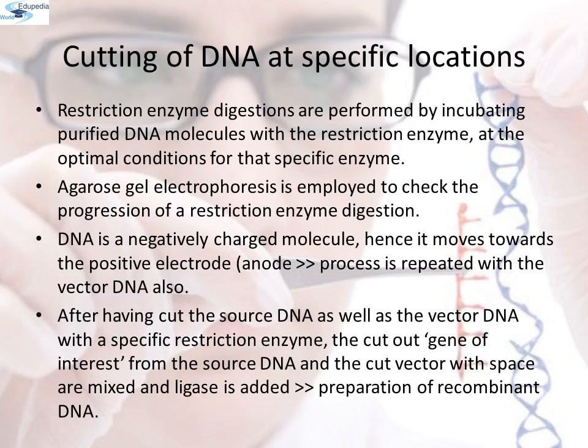The joining of DNA involves several processes. After cutting the source DNA and the vector DNA with a specific restriction enzyme, the gene of interest cut from the source DNA and the cut vector are mixed together and ligase is added. This results in the preparation of a recombinant DNA.